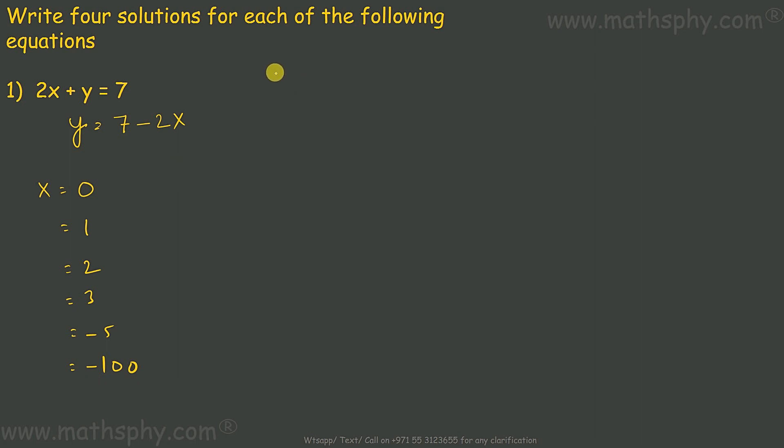Now, when x is 0, so y would be 7 minus 2 into 0, this would be 7 minus 2 into 0 is 0, sums up to 7. So, first solution would be 0, 7 - x is 0 and y is 7. Second can be, let's take x as 2, so 7 minus 2 into 2 means 7 minus 4 gives you 3. So, this will be x is 2 and y is 3.